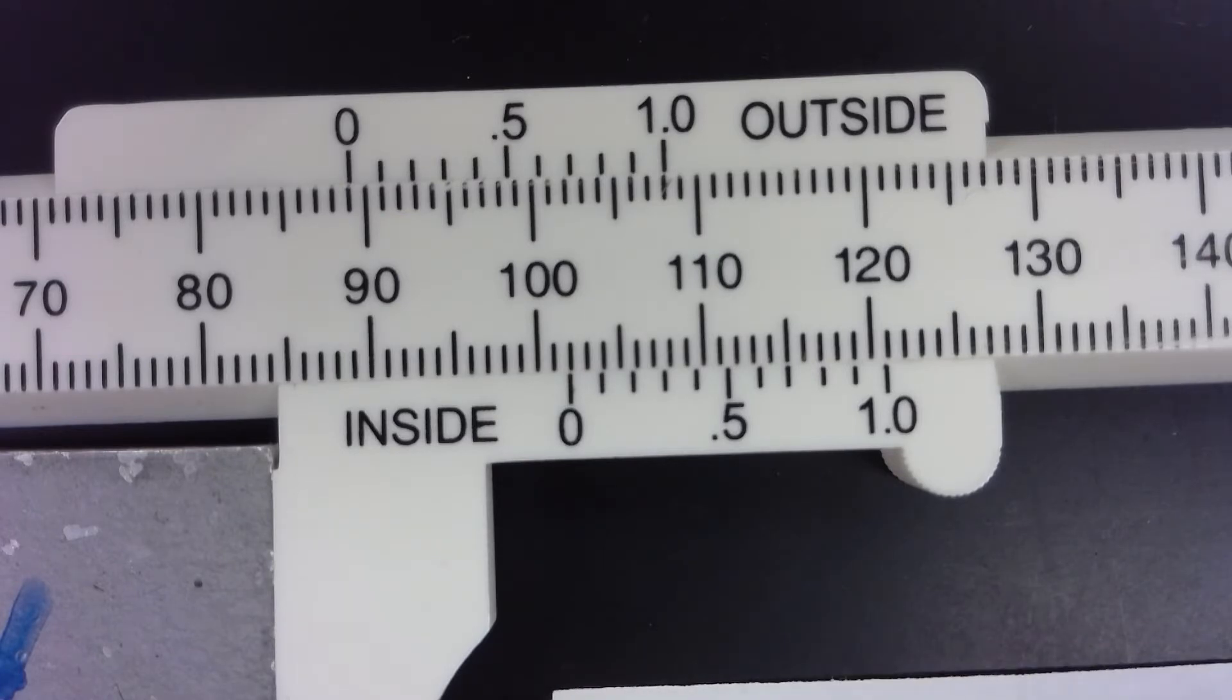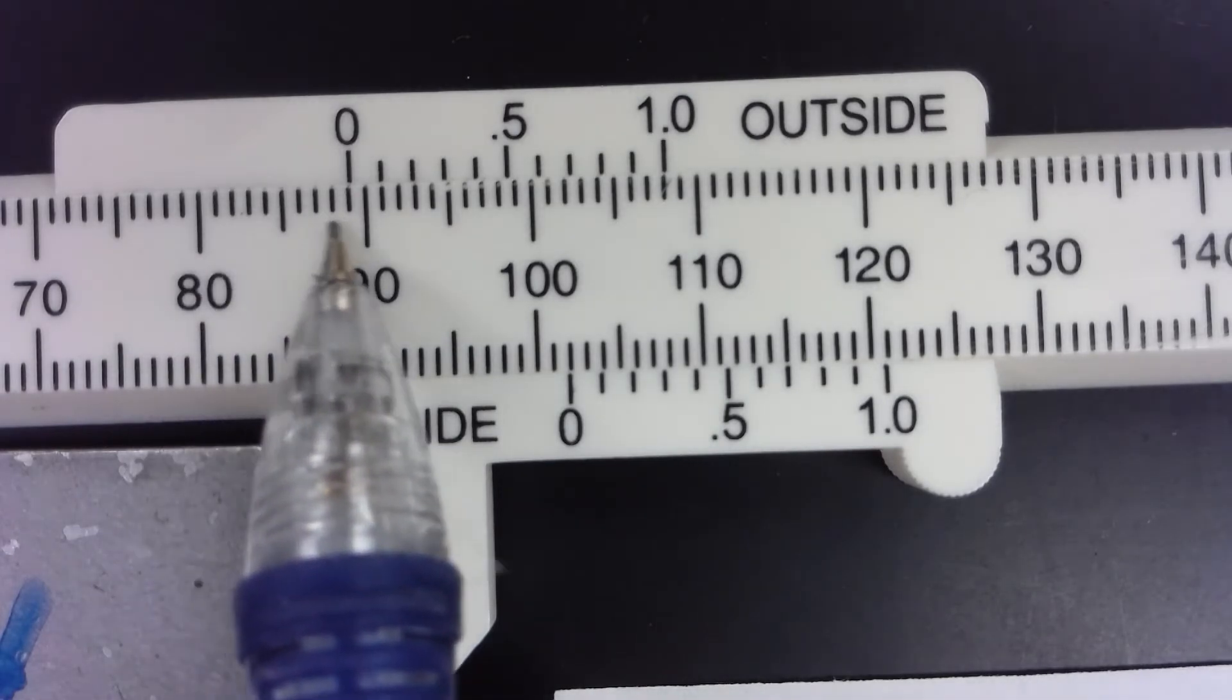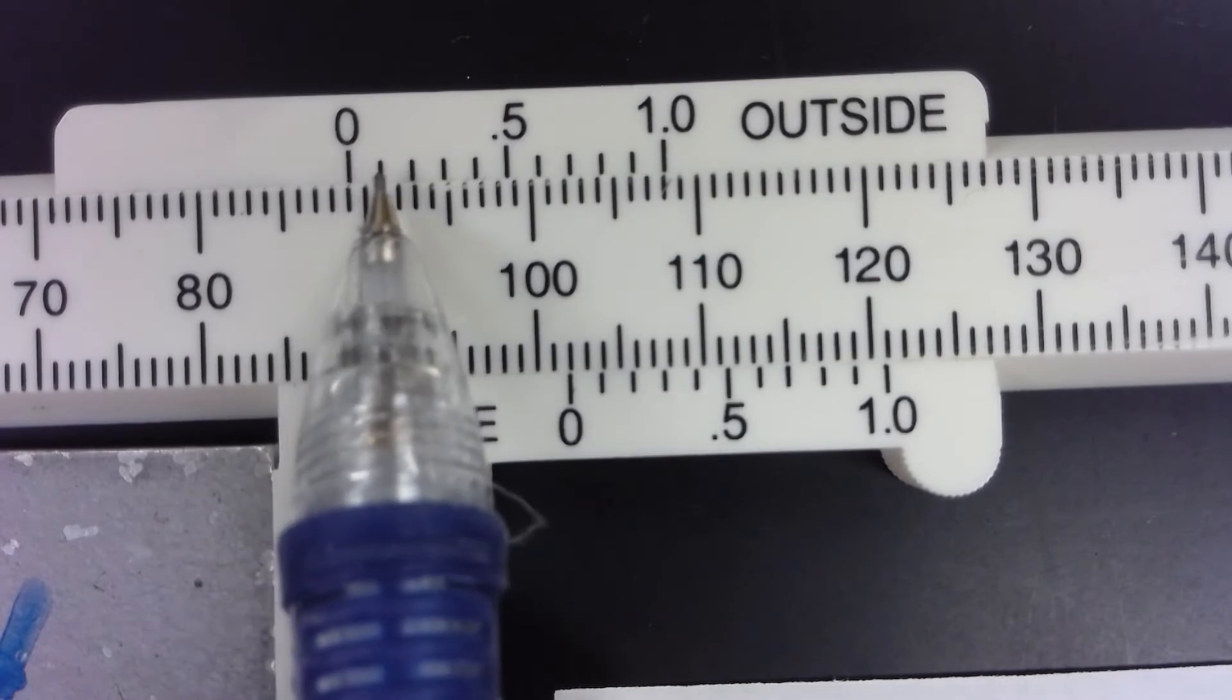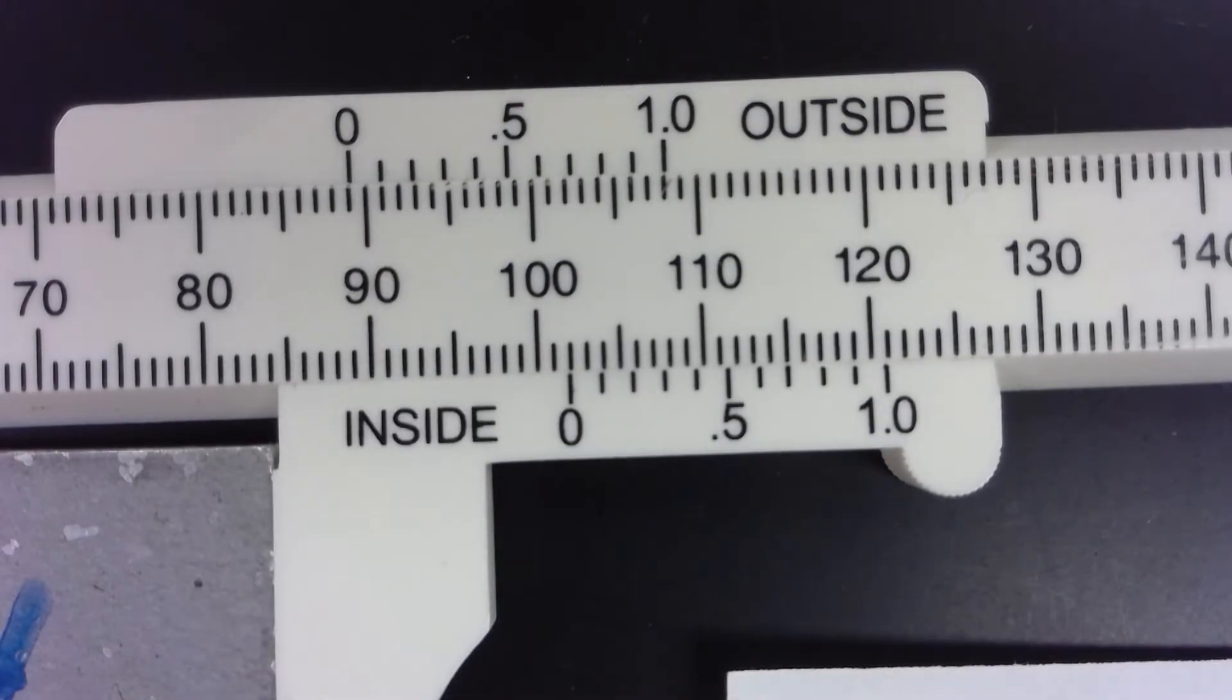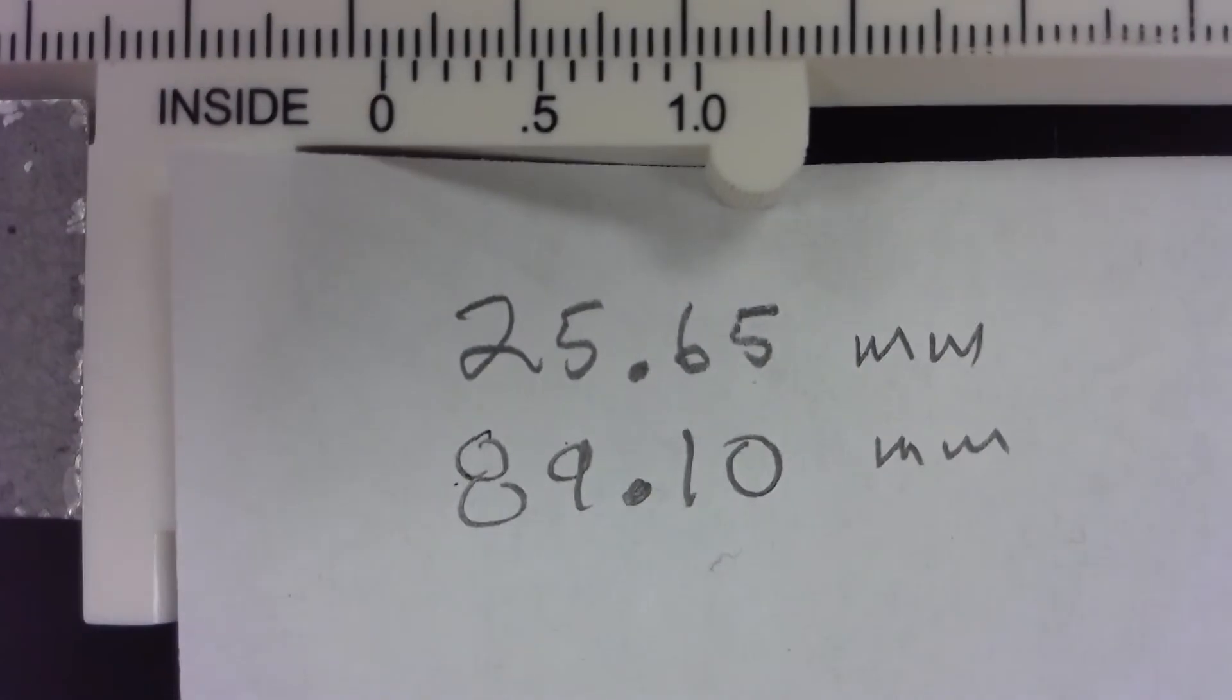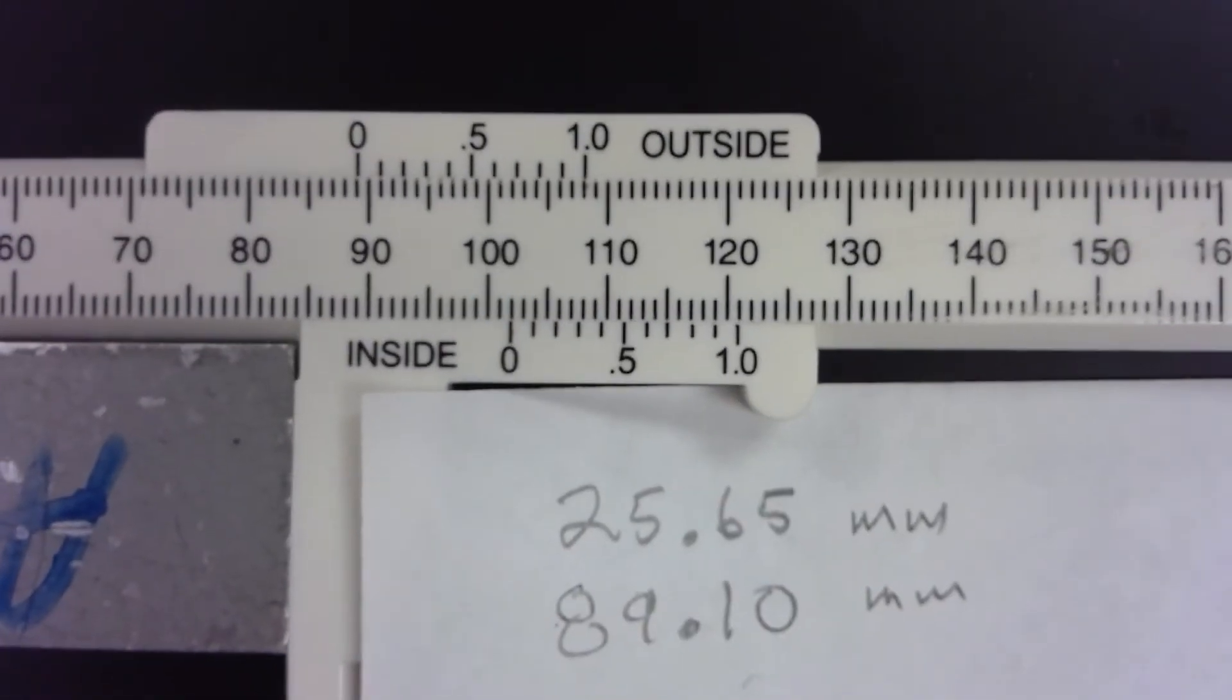And these are millimeters. So again, 80, 1, 2, 3, 4, 5, 6, 7, 8, 9, and 1—89.1. And if that one is lined up exactly, we write it as 89.10 for that reading.